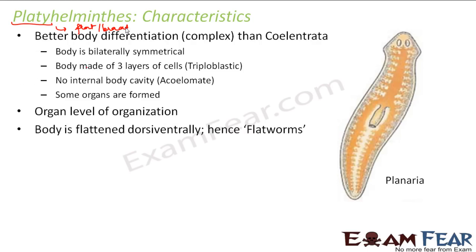Platyhelminthes have better body differentiation than cnidarians — their body structure is a little more complex. One of their key characteristics is that the body is bilaterally symmetrical, meaning if we divide an object into two halves, the right half and the left half are symmetrical to each other.